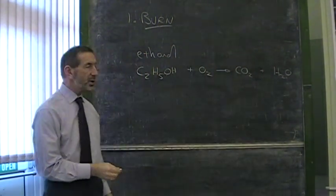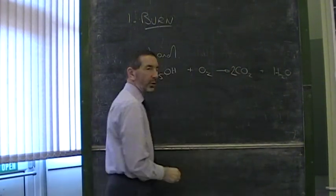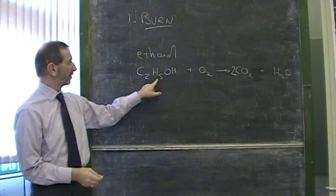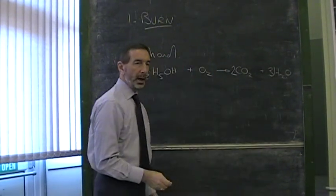Can we balance this equation? If we begin with two carbons, we begin with two carbons. If we begin with a total of six hydrogens, we end up with a total of six hydrogens. But be careful.